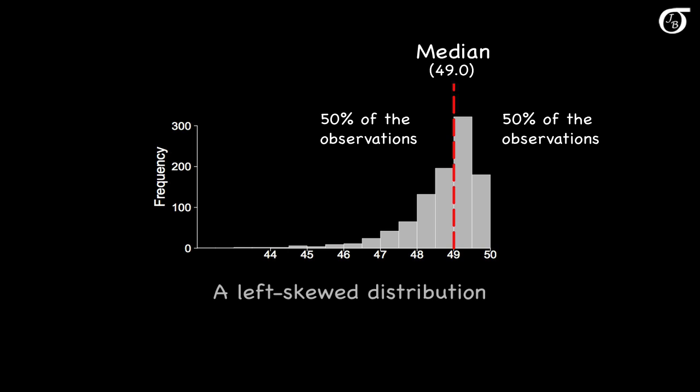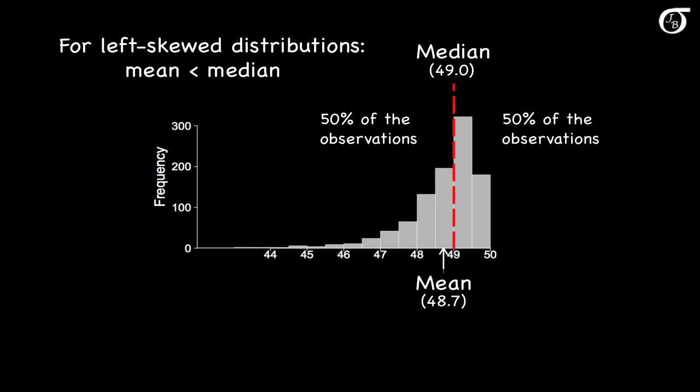And if we went to the raw data and calculated the mean, we'd see that it's a little less than the median. These values out here in the left tail will have more of an effect on the mean than the median. For left skewed distributions, the mean is less than the median.